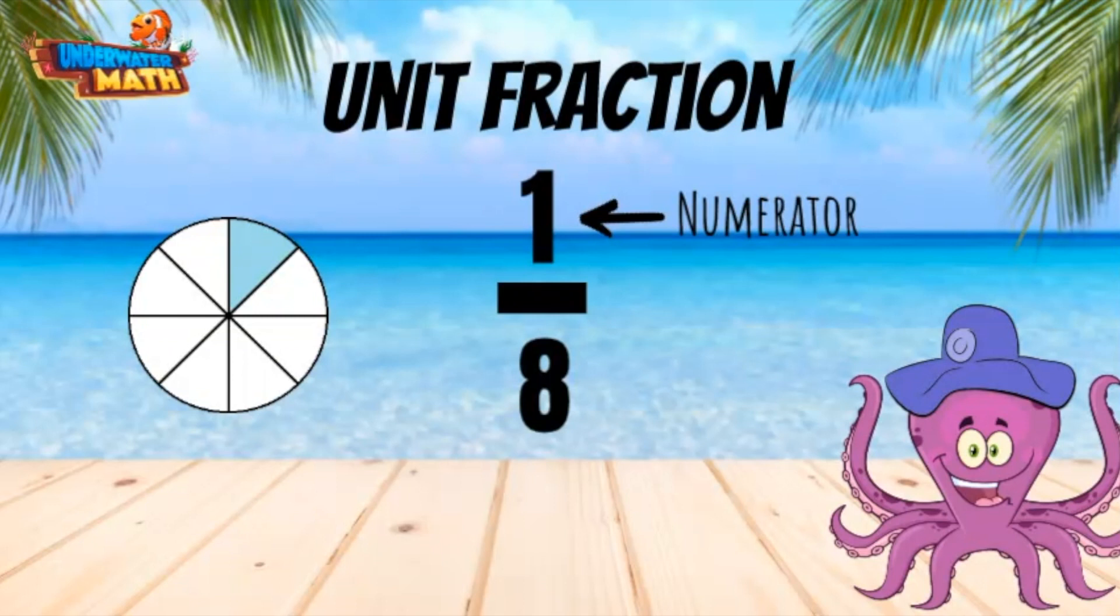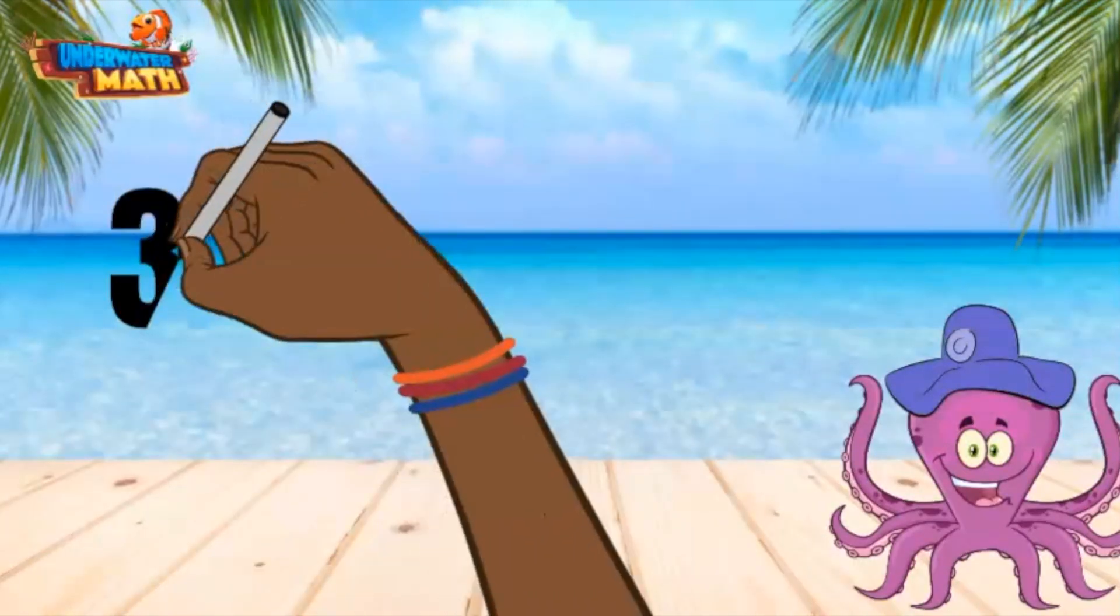As an octopus, I love to add unit fractions to make whole numbers. I mean, anyone with as many tentacles as I have is an expert at it. My favorite whole number is three. I bet you thought I was going to say eight, but that would have been too obvious.